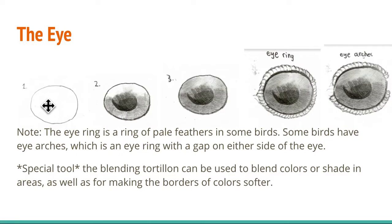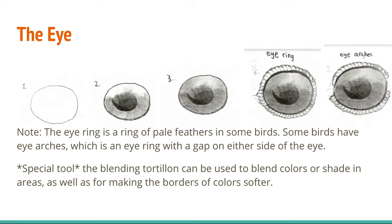First you make the outline, which is an oval, but the shape will change for different birds. Then you draw the basic shape below the eye, and you can shade in the bottom half of the eye and leave the top blank. Then you go into more detail and you can choose to have an eye ring or eye arches. Eye arches are an eye ring that has a gap on the middle and either side of the bird. An eye ring is a ring of pale feathers around the eye on some birds. A special tool I use for these drawings is a blending tortillon — it's kind of like a stick of rolled up paper, and I find it very helpful for blending colors together.